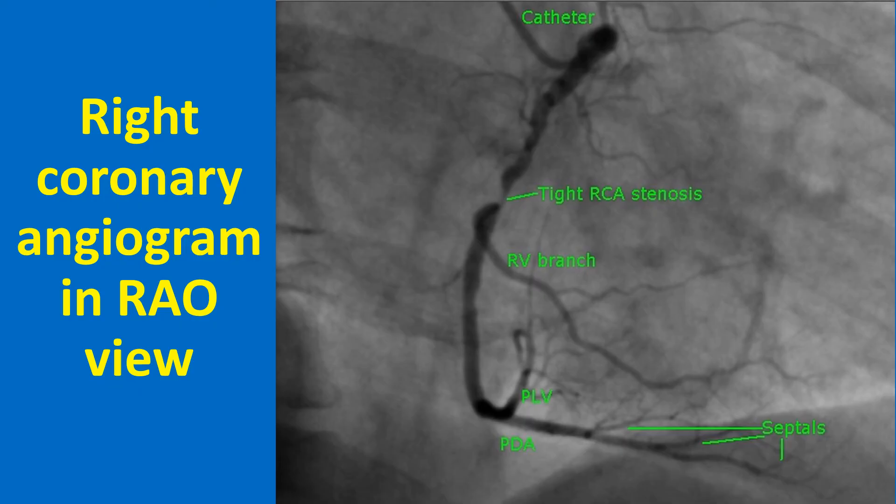In another right coronary angiogram in RAO view, septal branches of the PDA and PLV are seen well. The RAO view shows the proximal part of the right coronary artery in a vertical line, with the spine seen on the right side. A tight stenosis is seen just before the origin of the right ventricular branch.